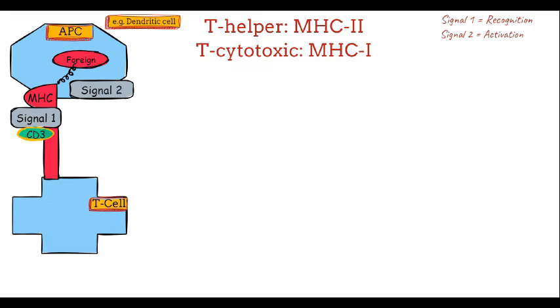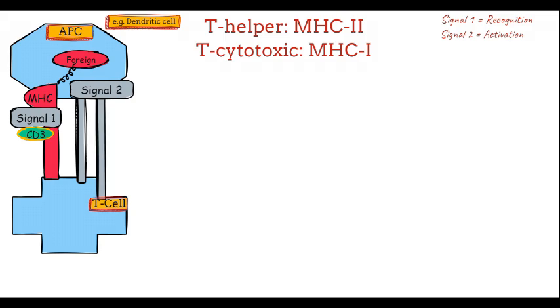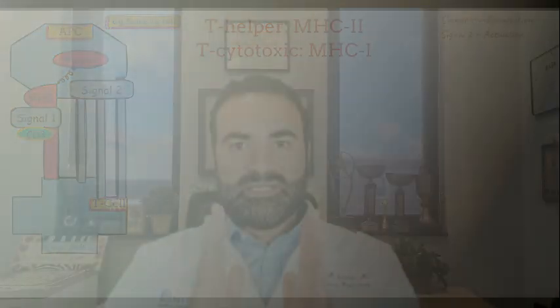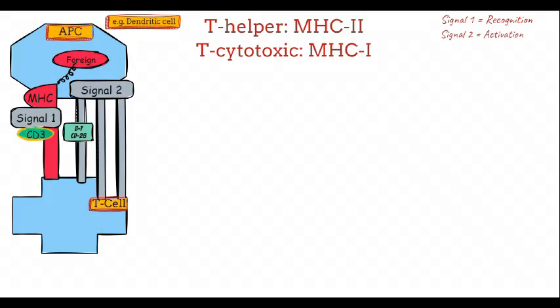Next, we move on to signal 2, which ensures the immune response is appropriate and not misdirected, avoiding autoimmunity. Signal 2 requires co-stimulatory signals between the T-cell and the antigen-presenting cell, functioning as a 3-lock mechanism. The first lock is the interaction between CD28 on the T-cell and B7 on the antigen-presenting cell. The second lock involves CD154 on the T-cell binding to CD40 on the antigen-presenting cell. The third lock involves integrins that stabilize the interaction.